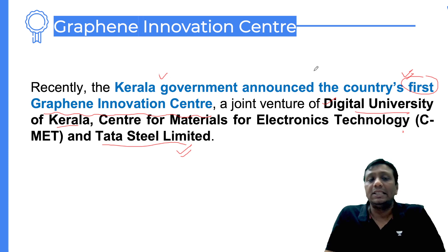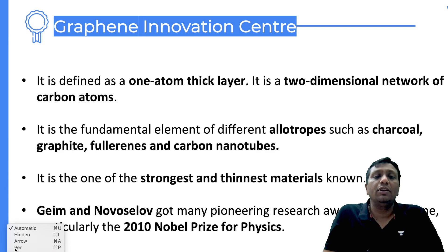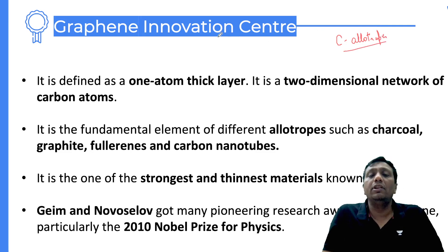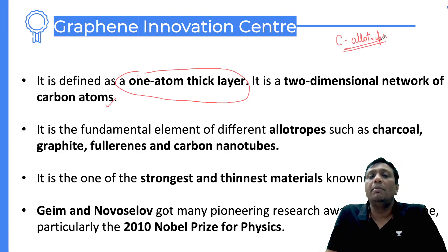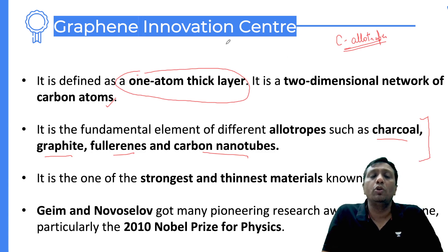Now the question is: what actually is graphene? Graphene is a kind of carbon allotrope. If you see the structure of graphene, it is a one atom thick layer and a two-dimensional network of carbon atoms. It is entirely made up of carbon - no other elements are there. As I mentioned, it is a carbon allotrope. Many carbon allotropes have been developed in laboratories - the list includes charcoal, graphite, fullerenes, carbon nanotubes, and other carbon allotropes.